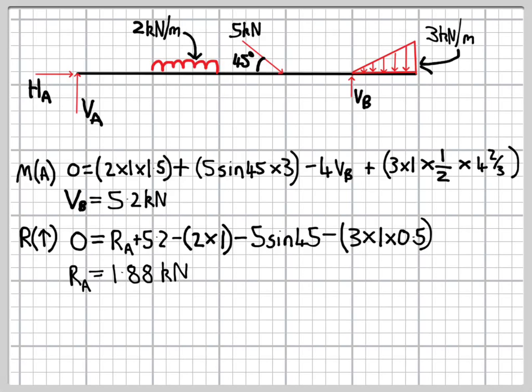We've got the 5.2, the reaction force at B, which we've just worked out. They're both acting upwards, and so they have positive signs. Then we have the UDL, that's acting downwards. The total value of that load is 2 times 1.